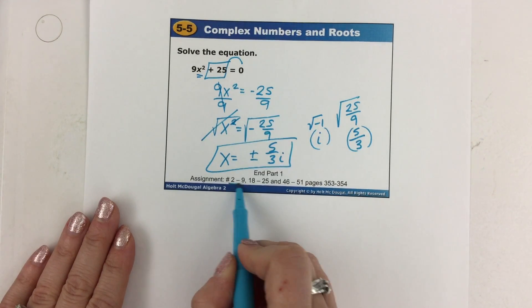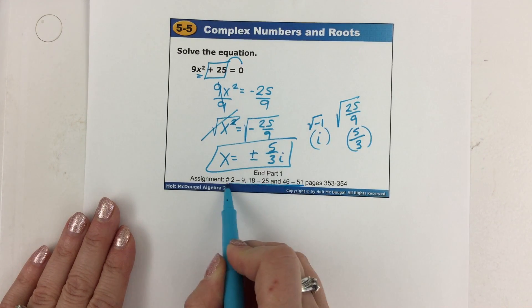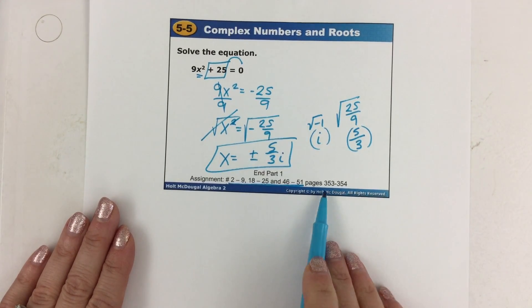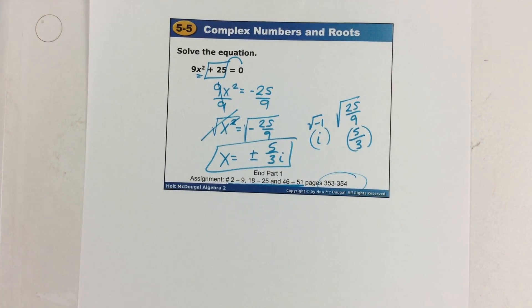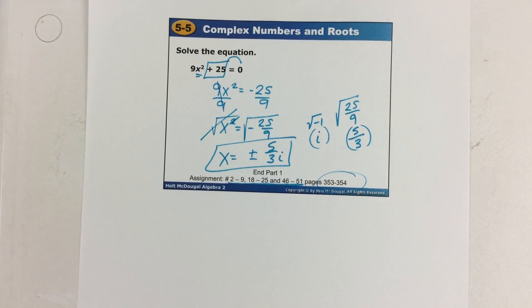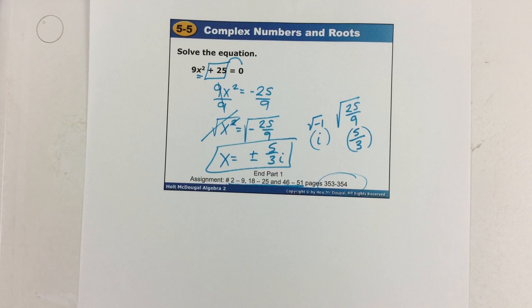Your assignment for today is to practice working with the imaginary unit in your textbook on page 353 and 354. Check out numbers 2 through 9, 18 to 25, and then jump ahead to 46 through 51. I hope you had a great time today — I know I did, and I'll talk to you soon.